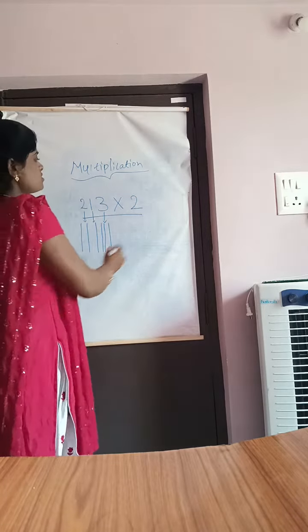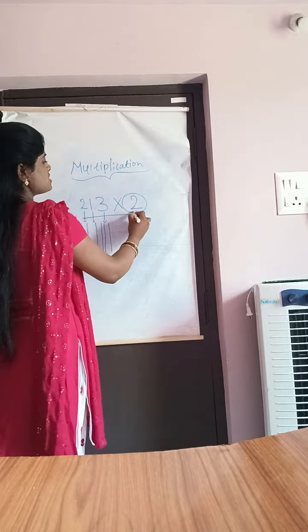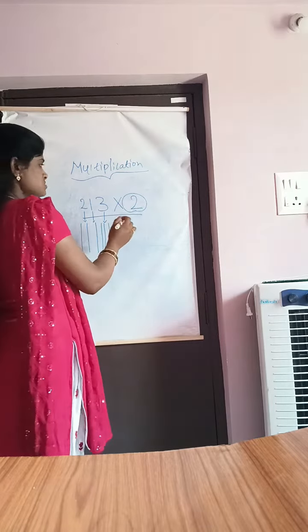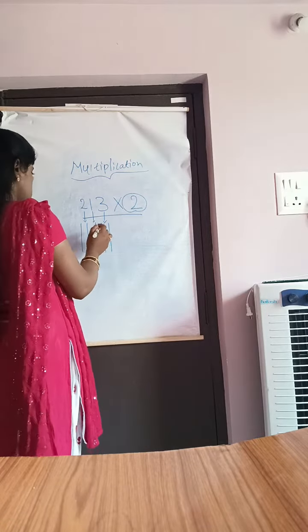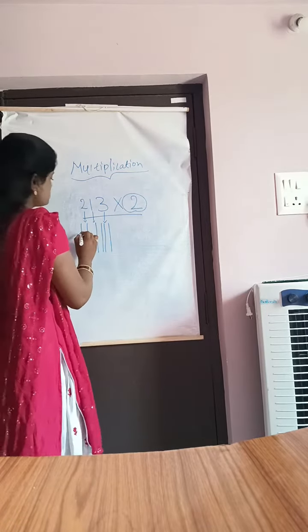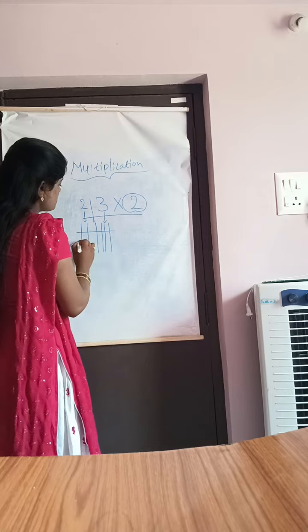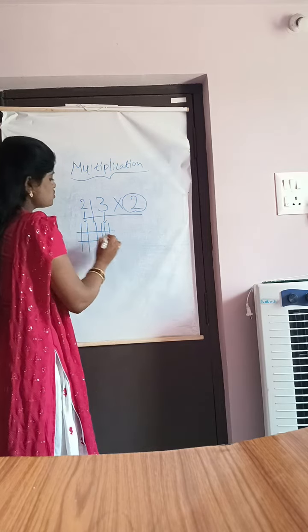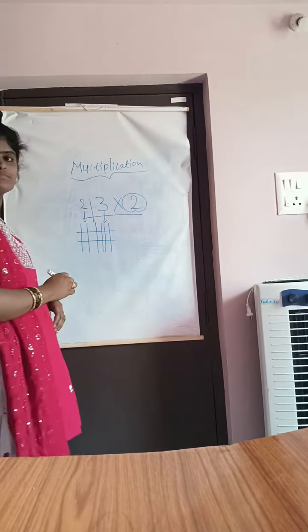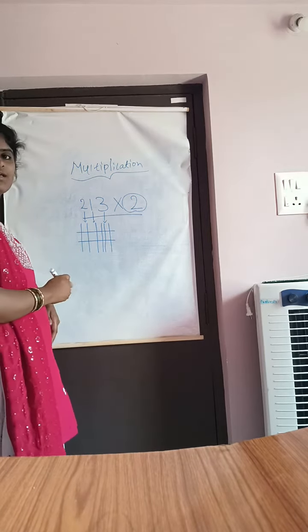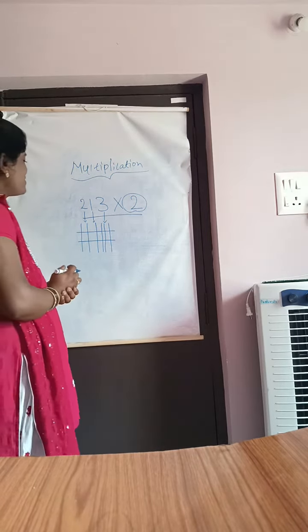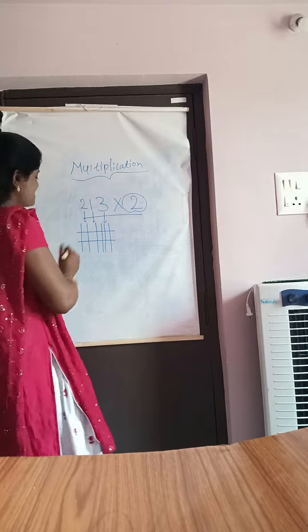So how much digit is here? 3. So 2 is the digit, better to do only 2 lines here. In the Rangoli way you can calculate.